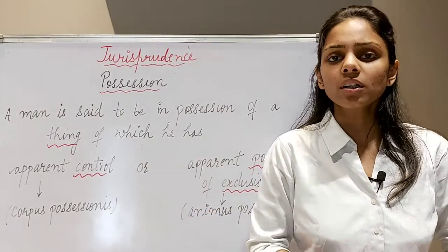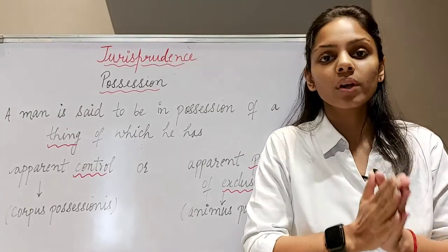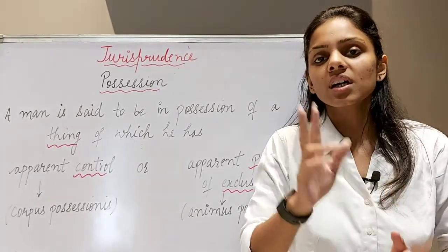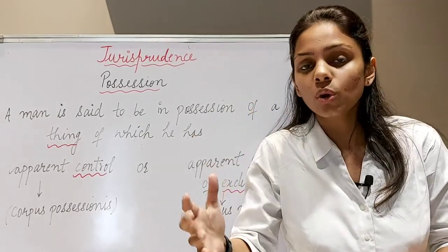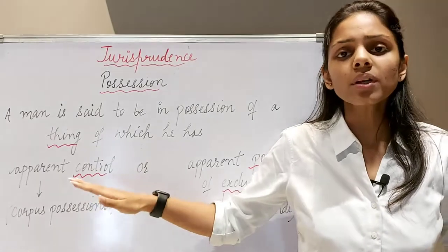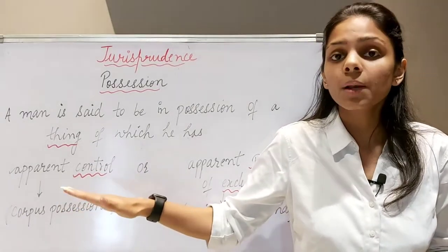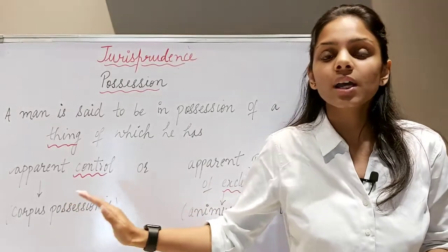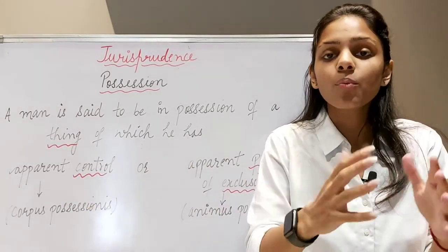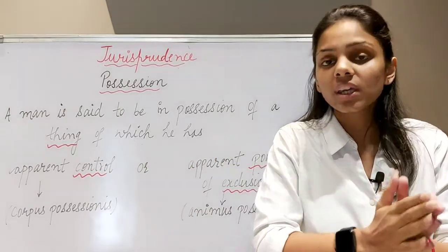Sab se pehle, apparent control ka matlab kya hota hai? True or actual physical control over a thing — kisi bhi cheez pe, be it movable or immovable. Jab kisi insaan ka true ya actual physical control hota hai us cheez ko hum possession kehte hain. For example, if I am in control of this board — agar mere paas is board ki actual physical possession hai, toh kaha jayega ki mere paas is cheez ki custody bhi hai. Custody ka matlab hota hai care and protection of a thing, it means actual physical control.